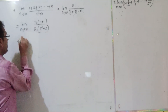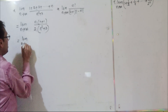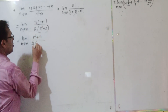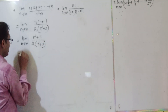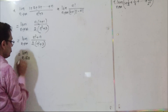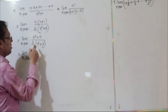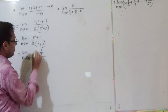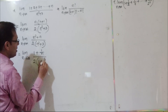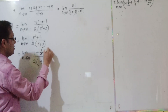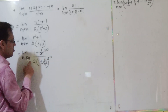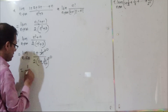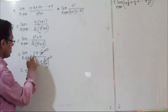Next, limit n tends to infinity of √(m² + n) divided by (2 · √(n² + 3)). The highest degree is n², so we divide by n². The expression becomes √(1 + 1/n) divided by 2·√(1 + 3/n²). As n tends to infinity, 1/n tends to 0 and 3/n² tends to 0, so we are left with 1 by 2. That is your answer.